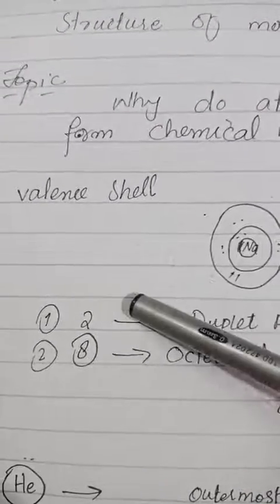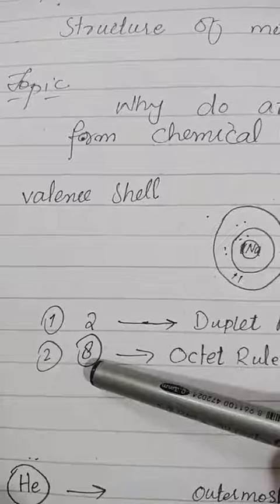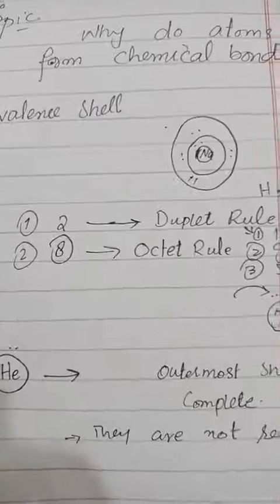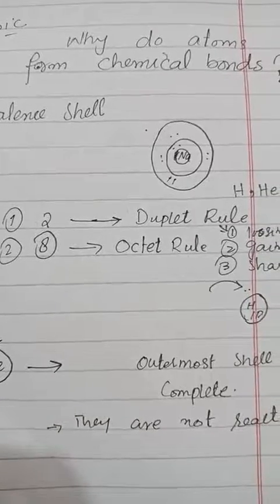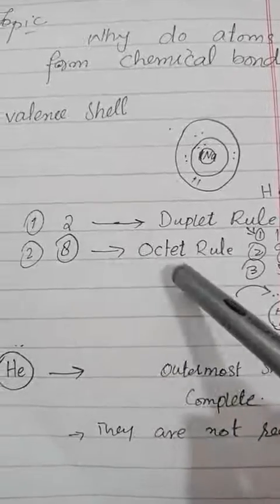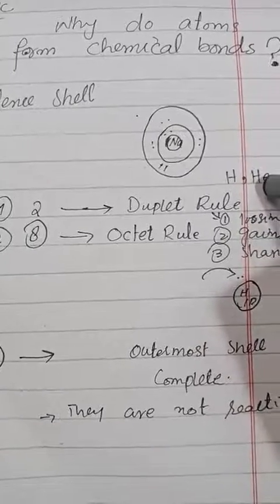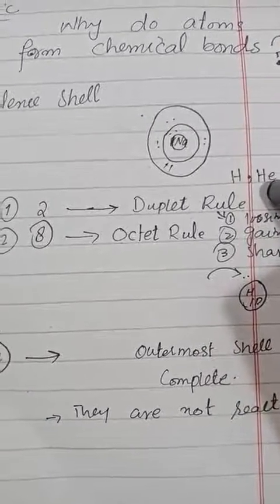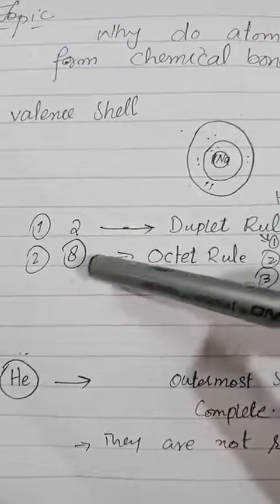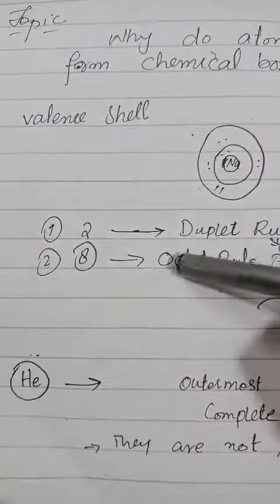Attaining two electrons in the valence shell is called the duplet rule, which is the sign of stability. The duplet rule applies to hydrogen and helium. We have another rule: if eight electrons should be present in their valence shell, that is the octet rule. If there are eight electrons present in the valence shell, the atom obtains an octet configuration.